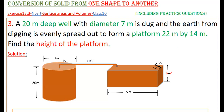The earth from digging a well of diameter 7 meters and height 20 meters is evenly spread to form a platform. The platform is in the shape of a cuboid — the measurements given are length 22 meters and breadth 14 meters, and we have to find the height. The well is in the form of a cylinder, and the diameter and height are known.